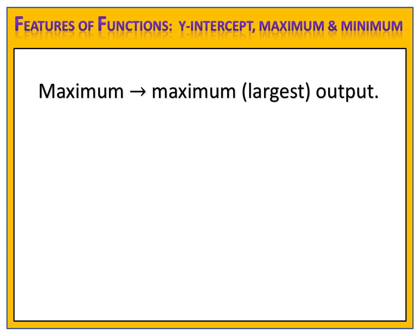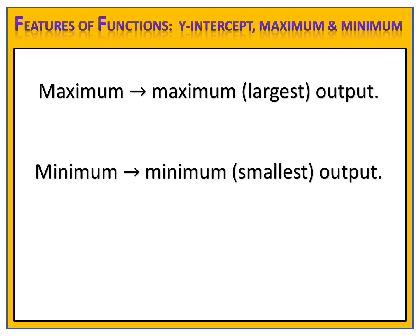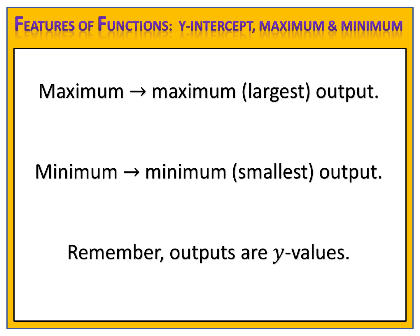Now let's talk about the maximum and minimum of a function. When we refer to maximum and minimum, we're talking about outputs. Maximum is the largest output that the function produces, and minimum refers to the smallest output that the function produces. Remember, outputs are y-values, so when we write the maximum or minimum, we are writing y-values.